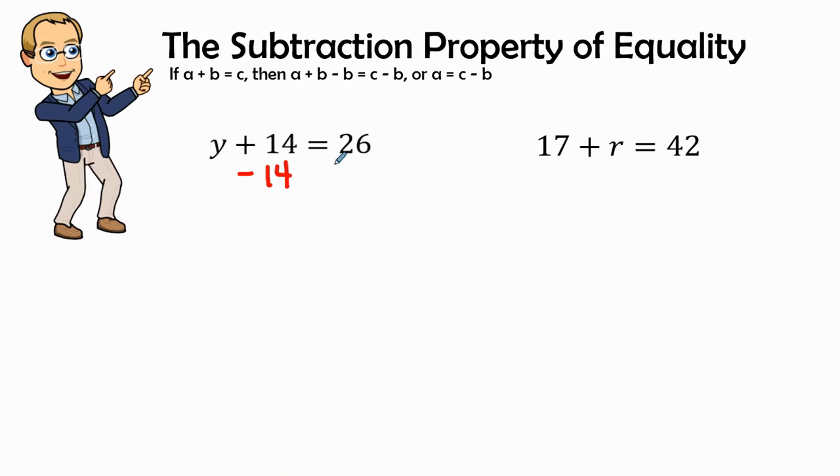In the subtraction property of equality, it means what I do on one side of the equation, I'm going to do on the second side or the opposite side of the equation, so I'm going to subtract 14 from both sides of the equation.